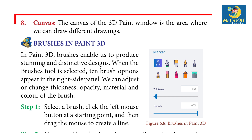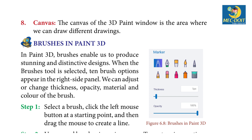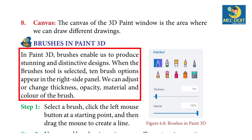The Canvas — the canvas of the Paint 3D window is the area where we can draw different drawings. Brushes in Paint 3D enable us to produce stunning and distinctive designs. When the Brushes tool is selected, 10 brush options appear in the right side panel. We can adjust or change the thickness, opacity, material, and color of the brush.